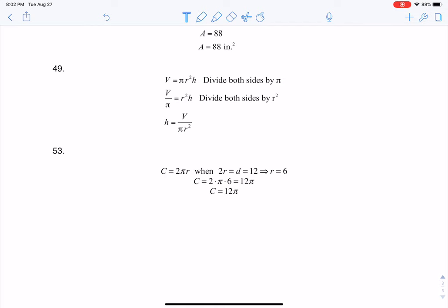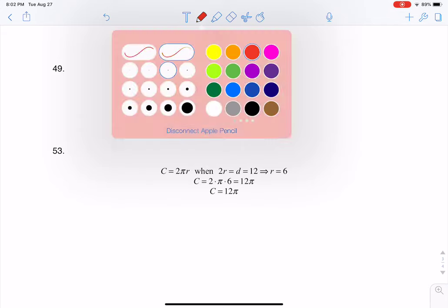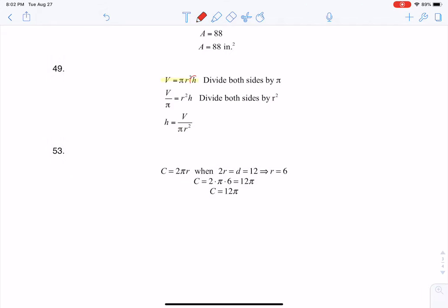So the directions in this problem say to take this equation, and let me just highlight it. We are given this equation, and it is asking us to go ahead, let me change colors, to solve for H.